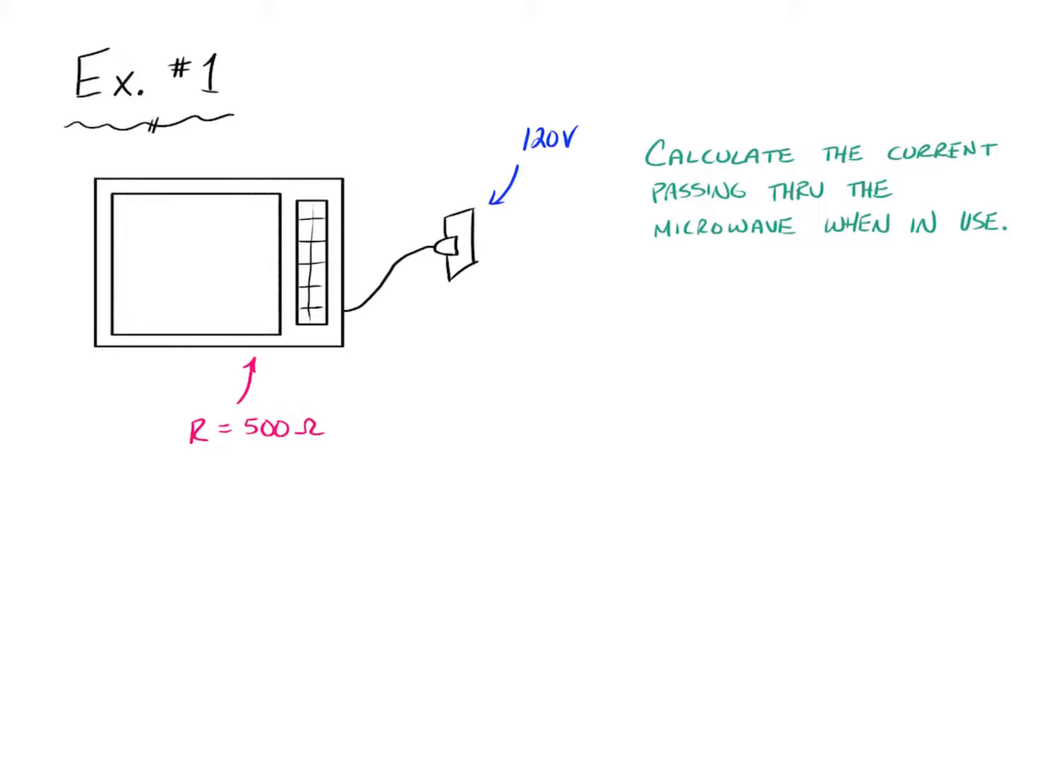So what we'd like to figure out is when this is operational, when this is actually, let's say, heating some food up, we want to know how much current is passing through that microwave. And this is a very straightforward Ohm's Law problem.